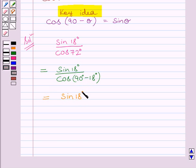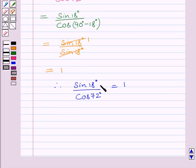So, we can write this expression is equal to sin 18 degrees upon sin 18 degrees. Now, sin 18 degrees and sin 18 degrees will cancel each other and we get answer 1. Therefore, sin 18 degrees upon cos 72 degrees is equal to 1. So, our required answer is 1.